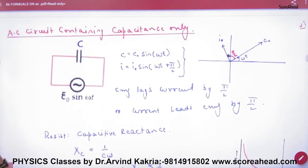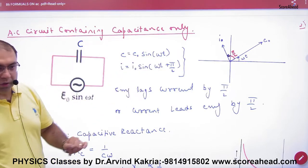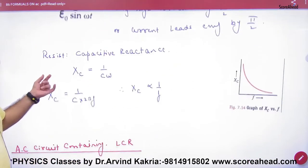In that way, with only capacitor, if EMF is the equation, then the current will lead by angle of pi by 2. So if EMF is omega t, current leads by pi by 2. And what do we call the resistance?